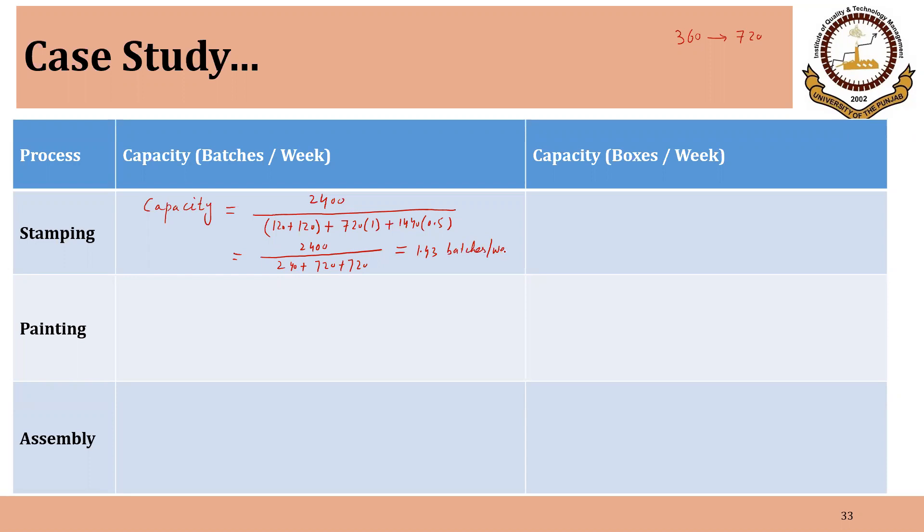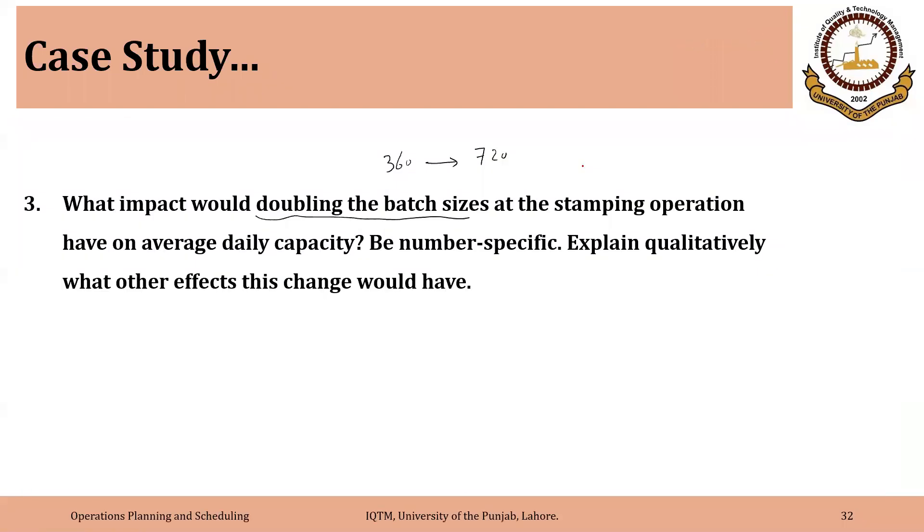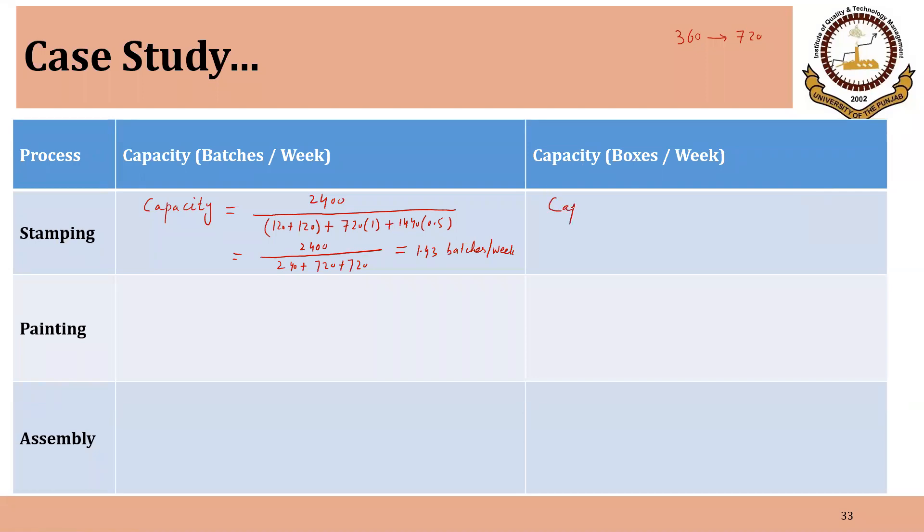Notice that the number of batches has reduced, but because the batch size is larger than the previous case, so capacity will increase. So the capacity will be equal to 1.43 into 720. So in terms of boxes per week, that will be equal to 1029. So you should notice that the capacity has increased, but it has not increased linearly. So previously it was 900 and now it is 1029. So the increase is not linear. So we will discuss why that is the case.